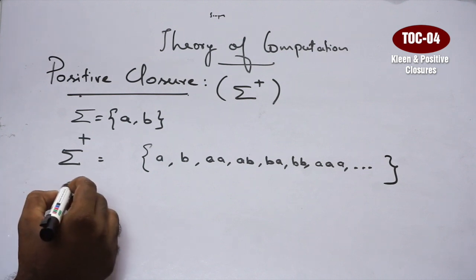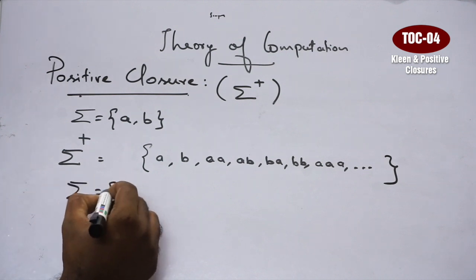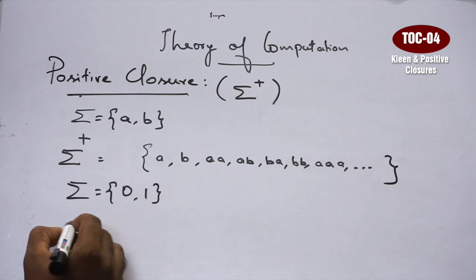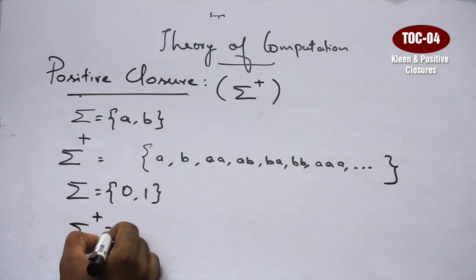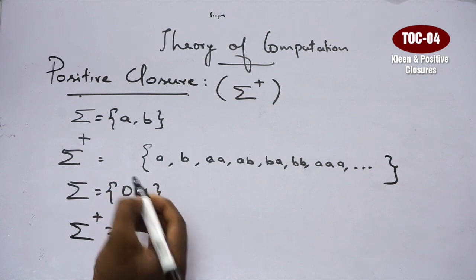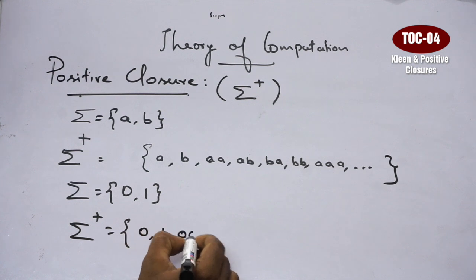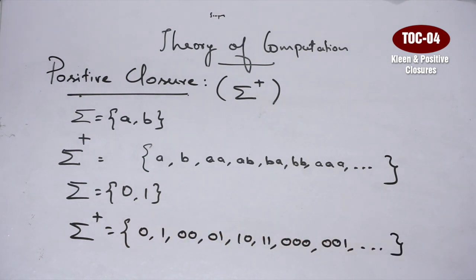Taking another example with alphabet {0, 1}. We will apply positive closure here. String of length 0 is skipped — positive closure starts with string of length 1: 0, 1. That is all. So positive closure and Kleene closure differ by exactly one thing: Kleene closure includes Epsilon (string of length 0), positive closure starts at string of length 1.